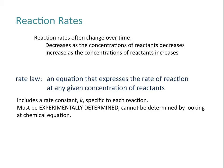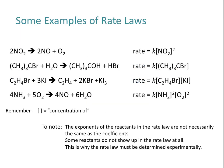The rate law including k must be experimentally determined; it can't be determined just by looking at a chemical equation. The exponents of the reactants in the rate law may be the same as the coefficients in the balanced equation, but not necessarily. Some reactants don't show up in the rate law at all, and so this is why the rate law and the rate constant must be determined experimentally.